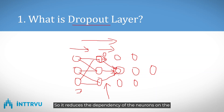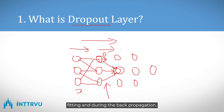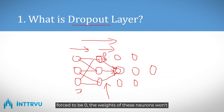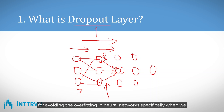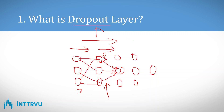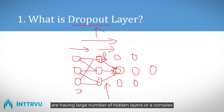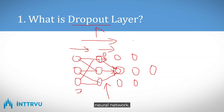This reduces the dependency of neurons on previous neurons and helps avoid overfitting. During back propagation, since the output of inactive neurons was forced to zero, their weights won't get updated. This is basically a dropout layer — used for avoiding overfitting in neural networks, specifically when we have a large number of hidden layers or a complex neural network.